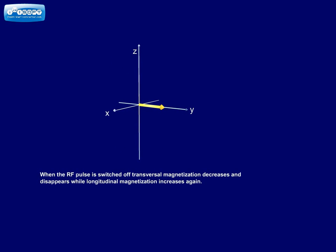When the RF pulse is switched off, transversal magnetization decreases and disappears, while longitudinal magnetization increases again.